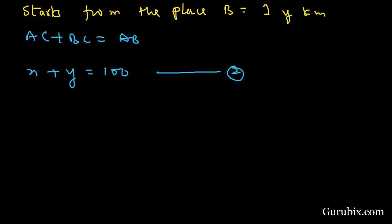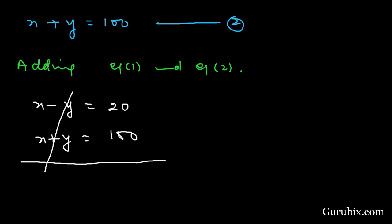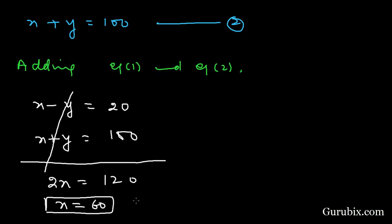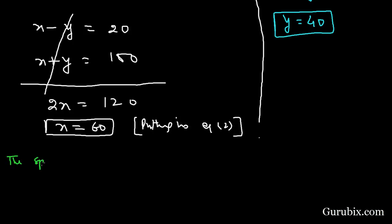We simply add equation one and equation two. Equation one: x minus y = 20. Equation two: x plus y = 100. Adding these two equations, the y terms cancel, giving 2x = 120, so x = 60. Substituting x = 60 into equation two: 60 plus y = 100, therefore y = 40.